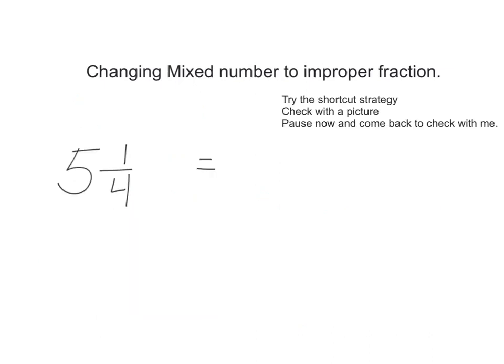Here we have another example, 5 and 1 fourth. I want you to try the shortcut. And then I want you to check your answer with the pictures. You can go ahead and pause. And when you come back, I will show you the answer. If you are struggling with the shortcut, go back a little. Rewind. Rewatch the shortcut to see if it helps you. Otherwise, try it with the picture. And then we'll do the shortcut together. Go ahead and pause now.